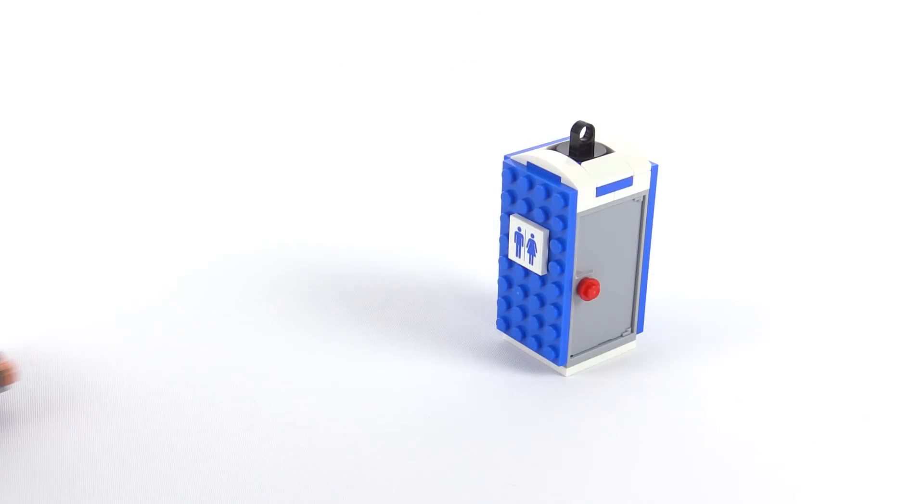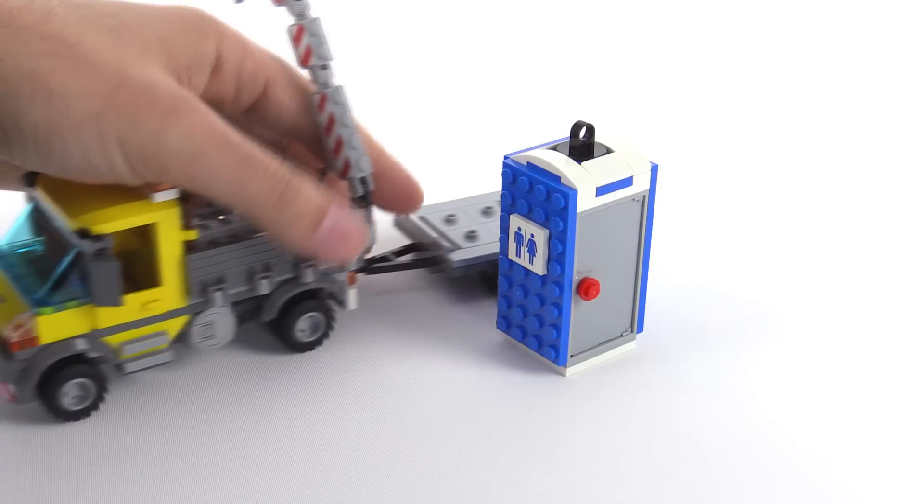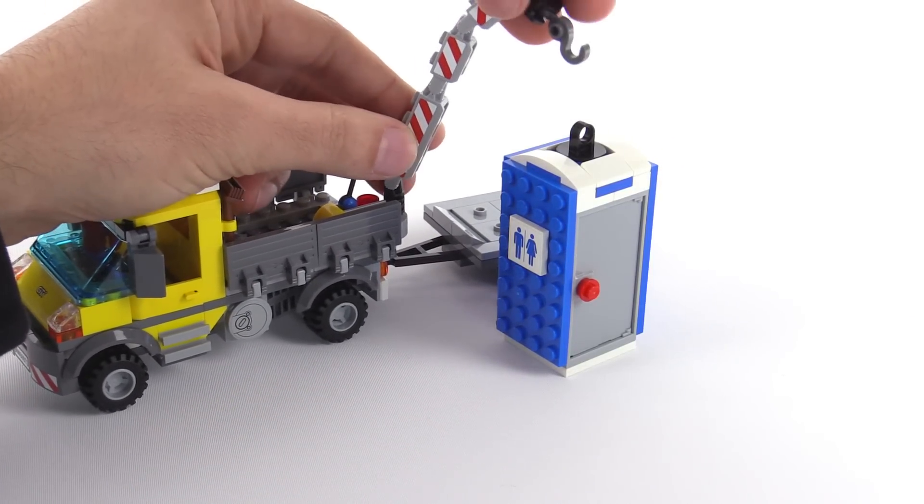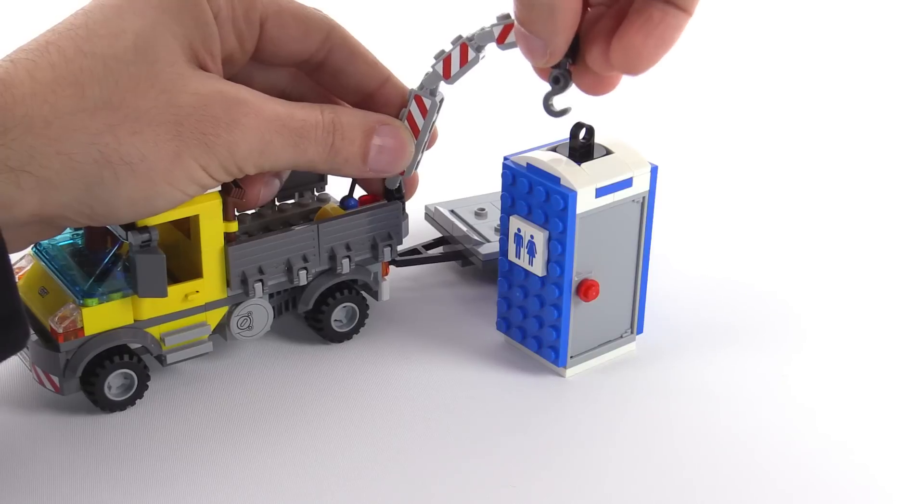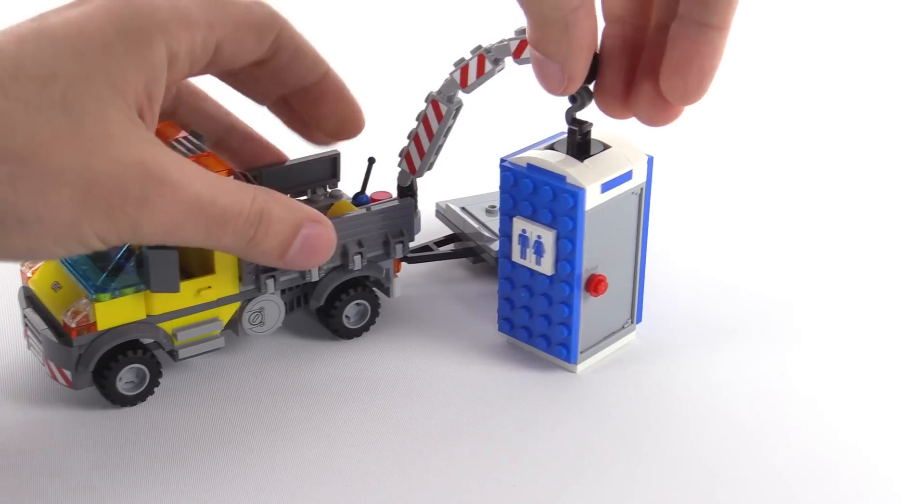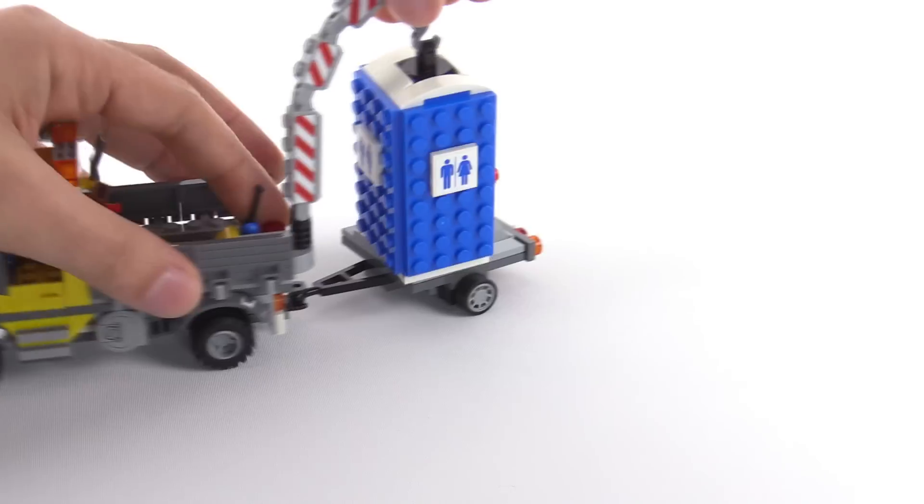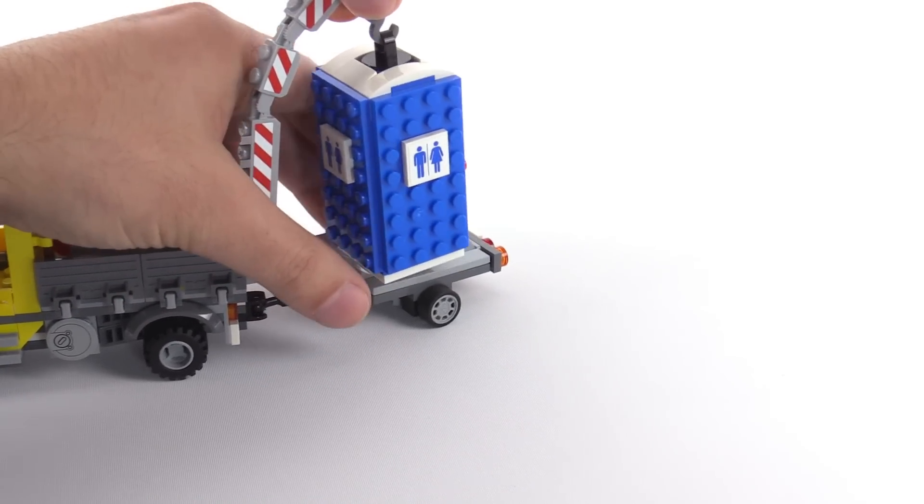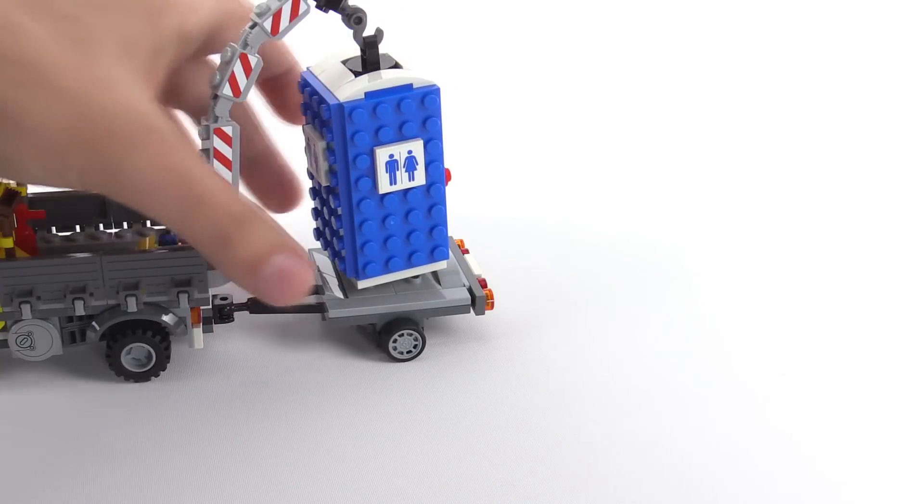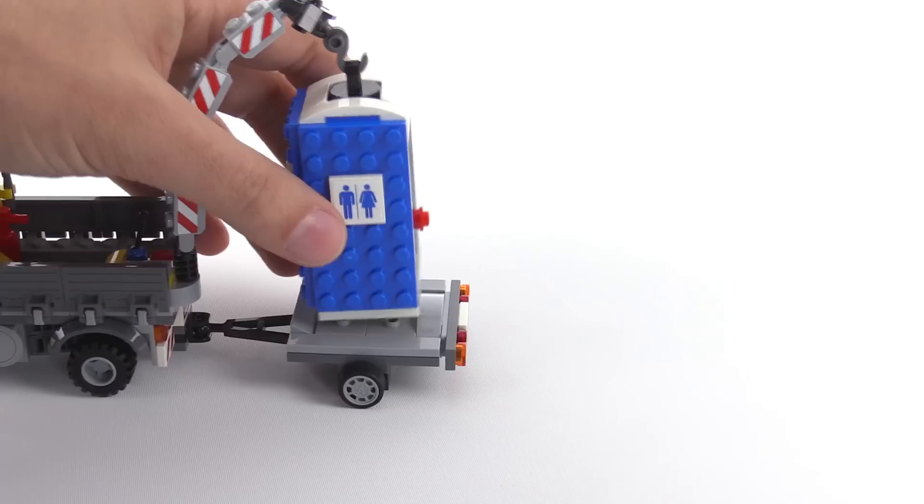Now to bring everything together, you can pick up the portable toilet with the truck. This crane arm gets up pretty high in the air, but it's actually just barely enough. So you can hook this thing, pick it up, and then you want to put it onto the trailer, so you have to orient it in a certain way so that the hook is able to angle out towards the rear.